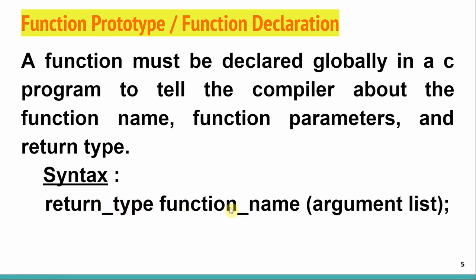Next you write the name of the function, and the third thing you need to mention is what input arguments it is going to take. For example, if I write a summation program I need a minimum of two numbers for addition, so those two numbers will go as input arguments.